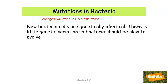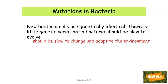Mutations in bacteria can take place. However, as we have just said, new bacteria cells are genetically identical in general, having been produced by the process of binary fission. So there is very little genetic variation between individuals. As a result of this, bacteria should be slow to evolve or to change. Remember, variation is the basis of evolution — when there is variation amongst a population, different organisms might be better adapted to the environment and thus be able to evolve.